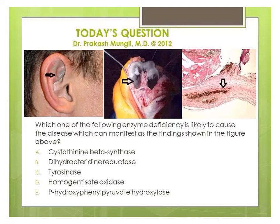The question is: which one of the following enzyme deficiencies is likely to cause the disease that can manifest as the findings shown in the figure above? In this figure, you can notice there is a slate gray or bluish black pigmentation in the ear lobule, and there is also a bluish black pigmentation of the joint cartilage and in the tissue.